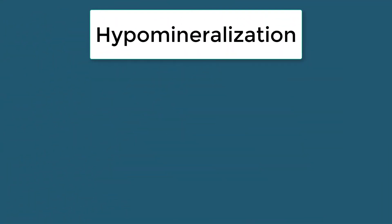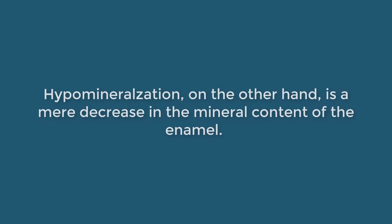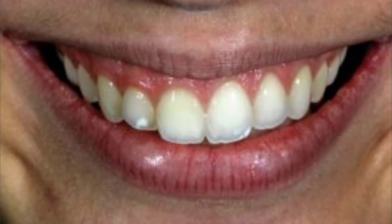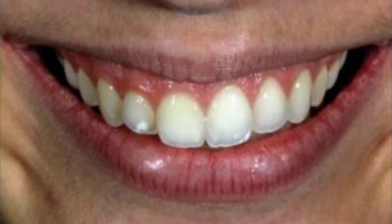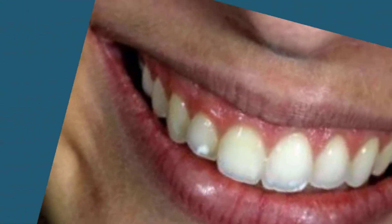Hypomineralization, on the other hand, is a mere decrease in the mineral content of the enamel. It can be severe enough to give the tooth a translucent appearance or mild enough to maintain its opacity. It is hypomineralization that leads to soft enamel.